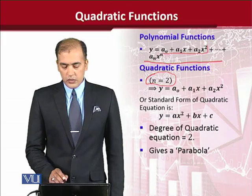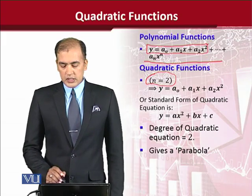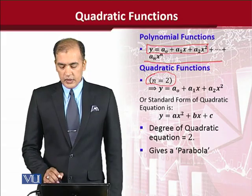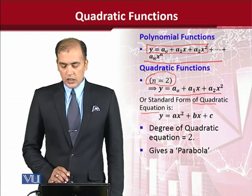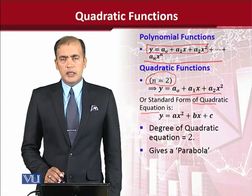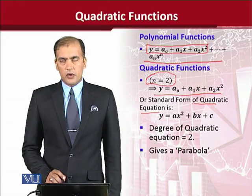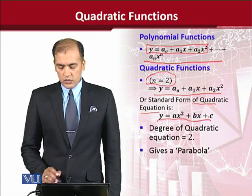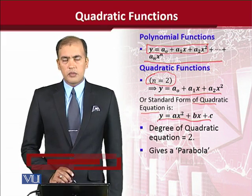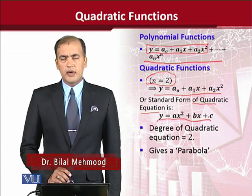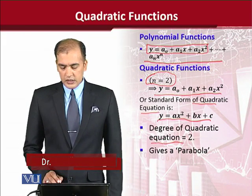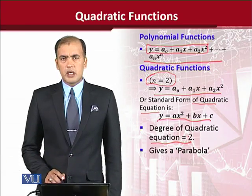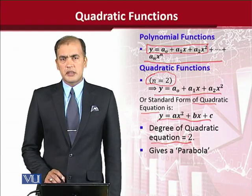We shall restrict the polynomial function to these terms and we will get the quadratic function. This quadratic function, now in the form of an equation, has a standard form: y is equal to ax squared plus bx plus c. This is well known as the quadratic equation. The degree of the quadratic equation is 2 — that is, the highest power of the independent variable in this equation is 2.